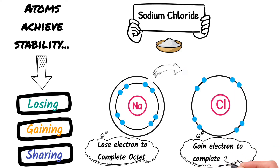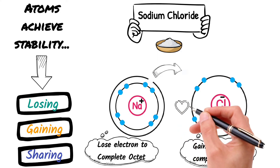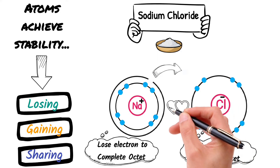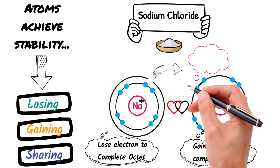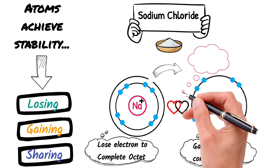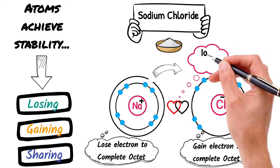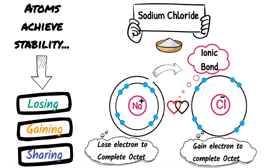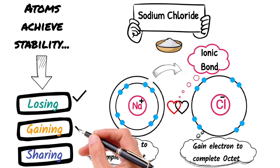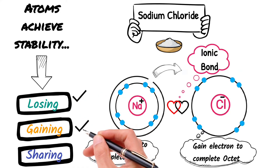So sodium loses one electron to become a positively charged ion, and chlorine gains one electron to become a negatively charged ion. Now when these two ions come together, they form a type of chemical bond known as an ionic bond. Both of these atoms now become stable — they stabilize themselves by losing and gaining electrons.